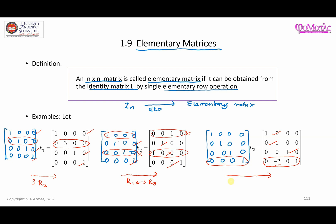The change is in the fourth row, where we get negative two. This comes from multiplying negative two times the second row and adding it to the fourth row. You can verify: 0 + (−2)(0) = 0, 0 + (−2)(1) = −2, 0 + (−2)(0) = 0, 1 + (−2)(0) = 1. So this is one single elementary row operation that turns the 4×4 identity matrix into an elementary matrix.